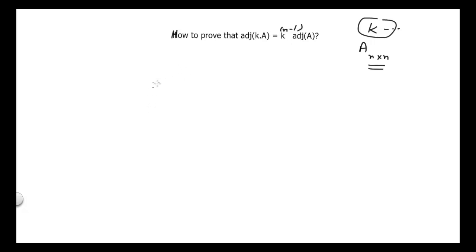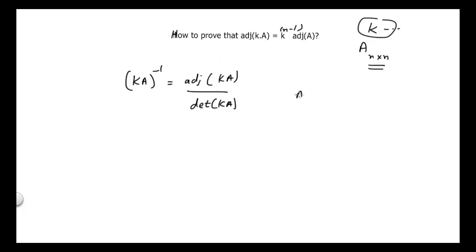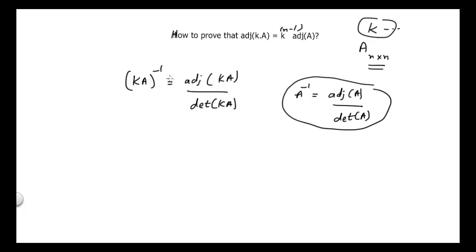We can begin our proof from: (kA) inverse is equal to adjoint of kA divided by determinant of kA. I'm writing this from the general formula used to find the inverse of any given matrix. The general formula is A inverse equals adjoint of A divided by determinant of A. Since kA is also a matrix, we can find its inverse using the same formula: (kA) inverse equals adjoint of kA divided by determinant of kA.